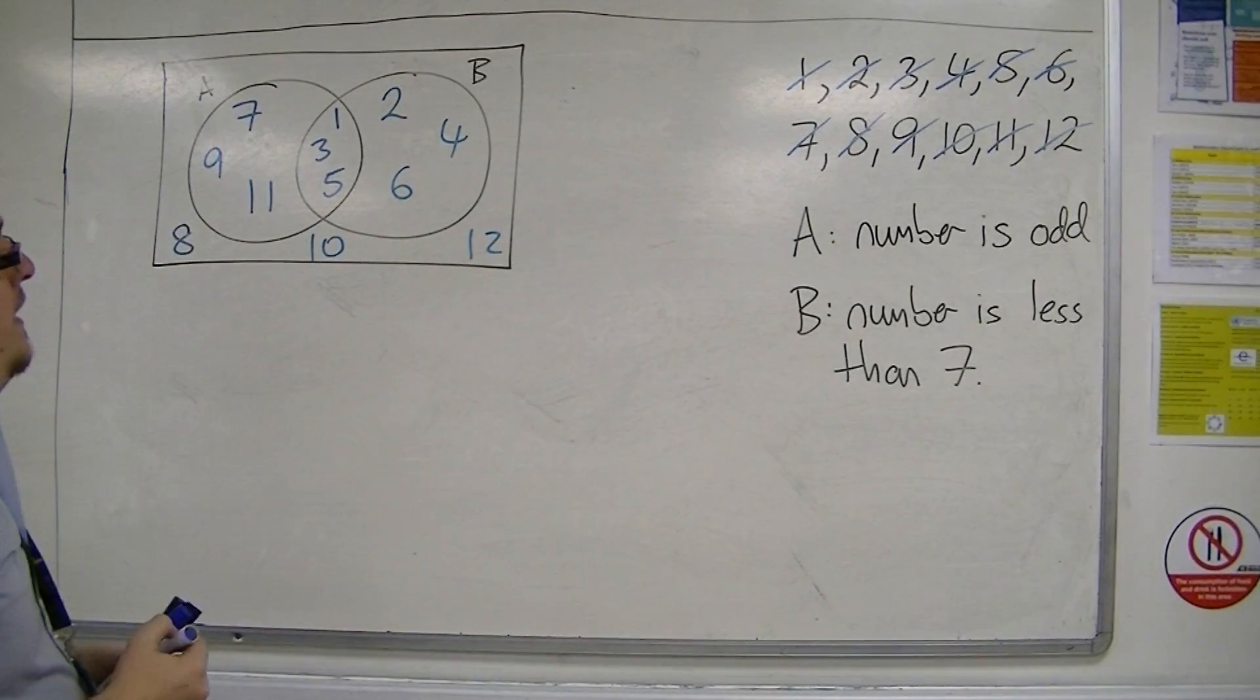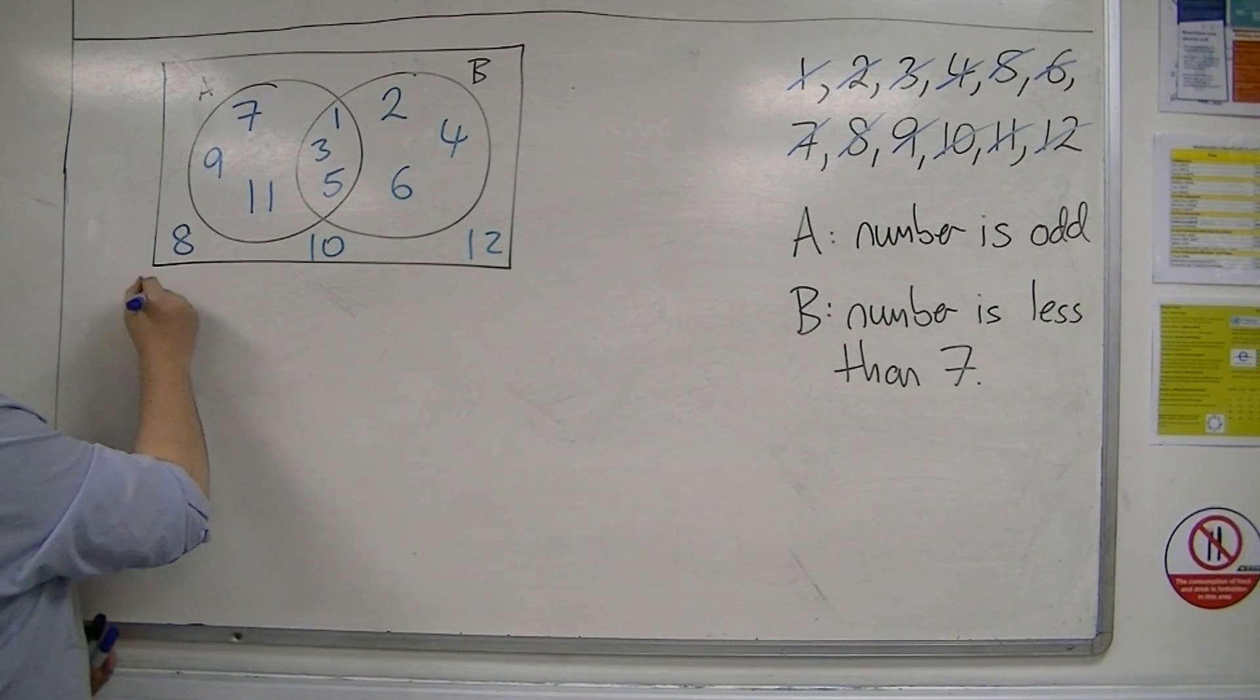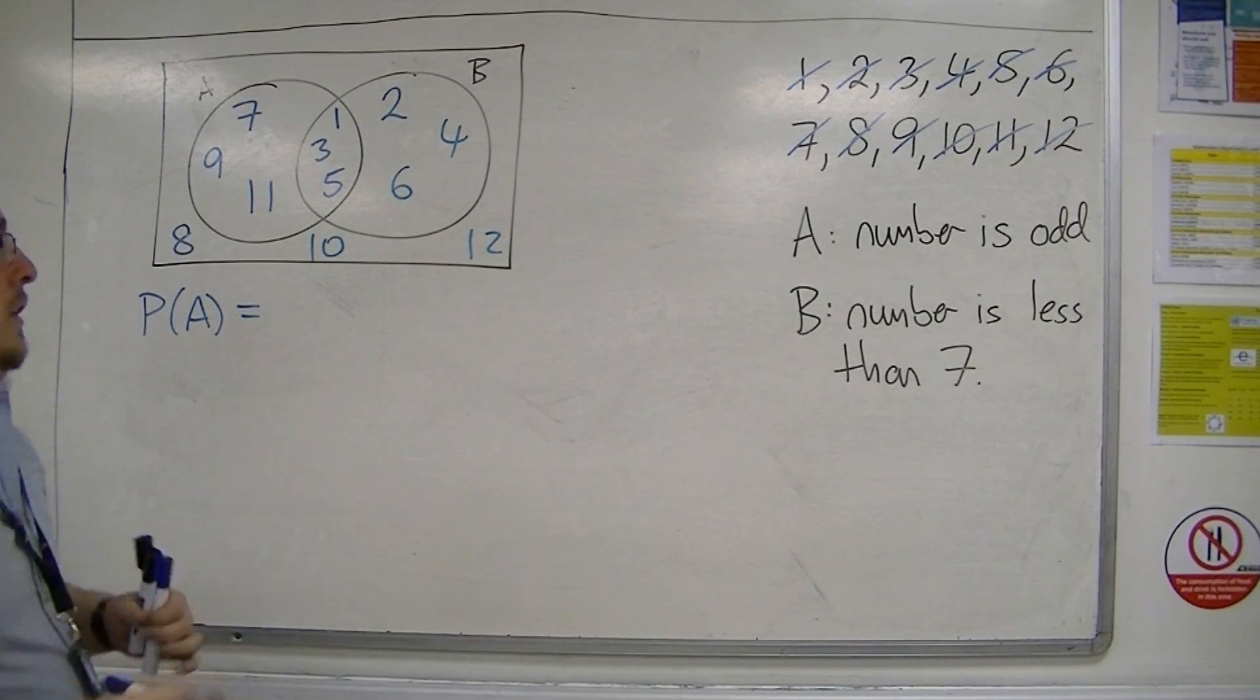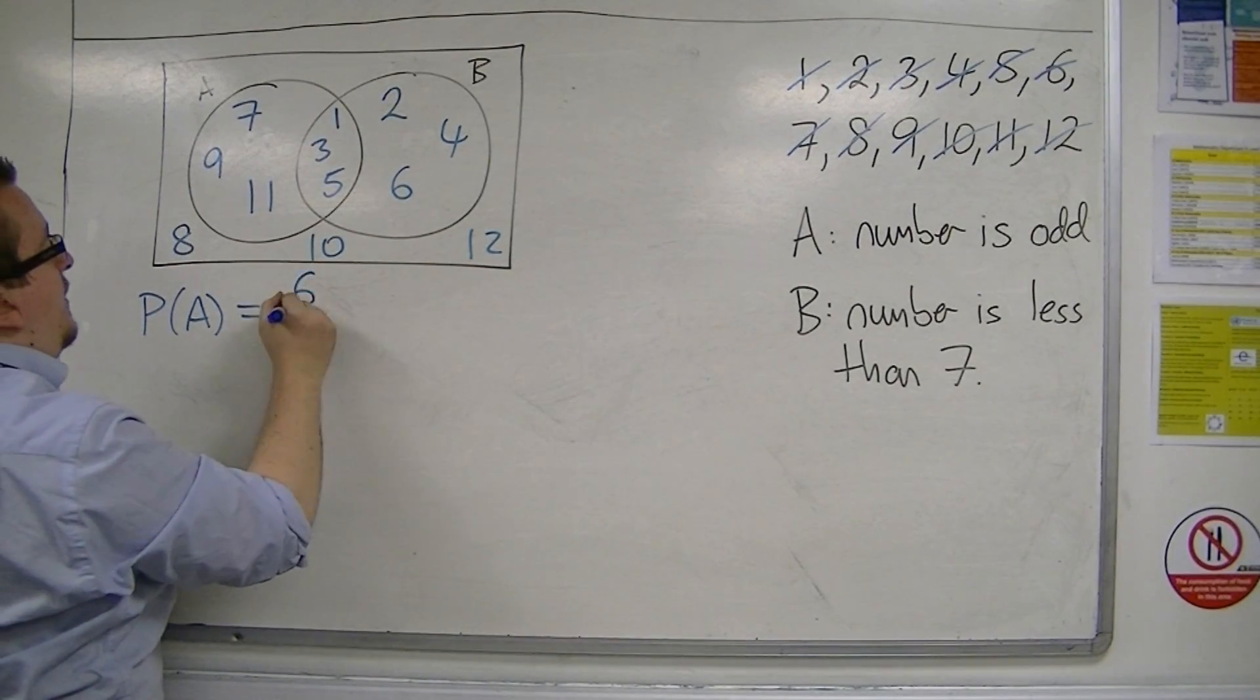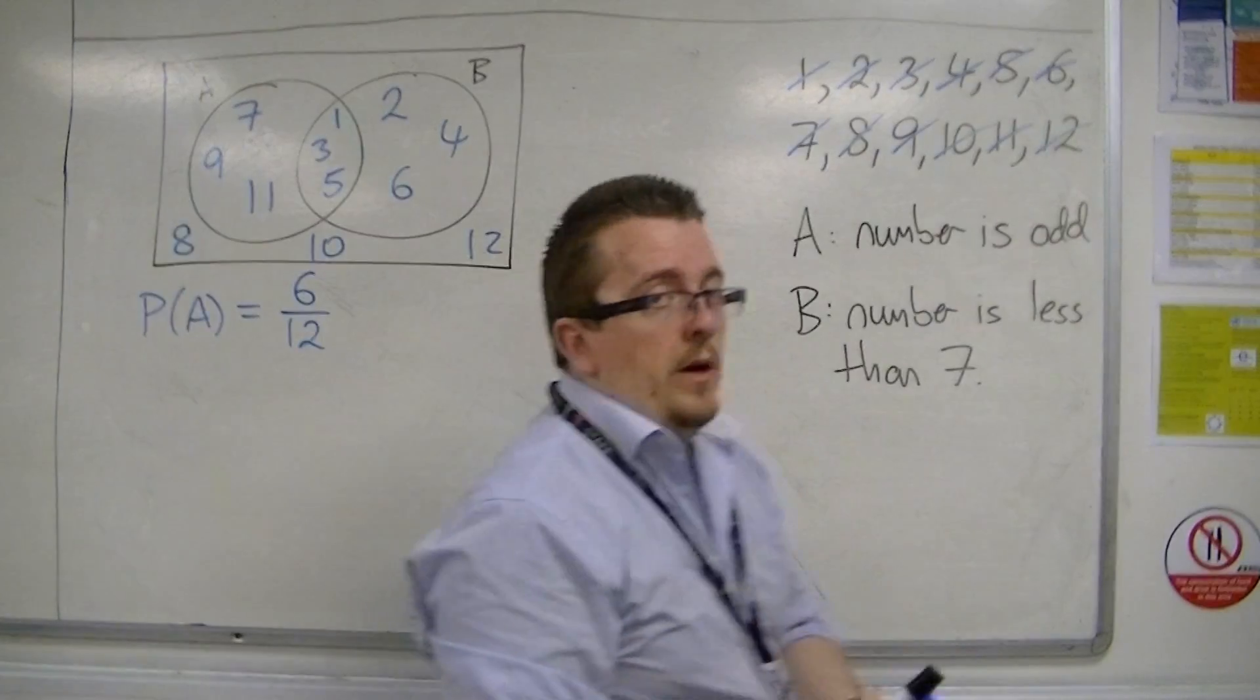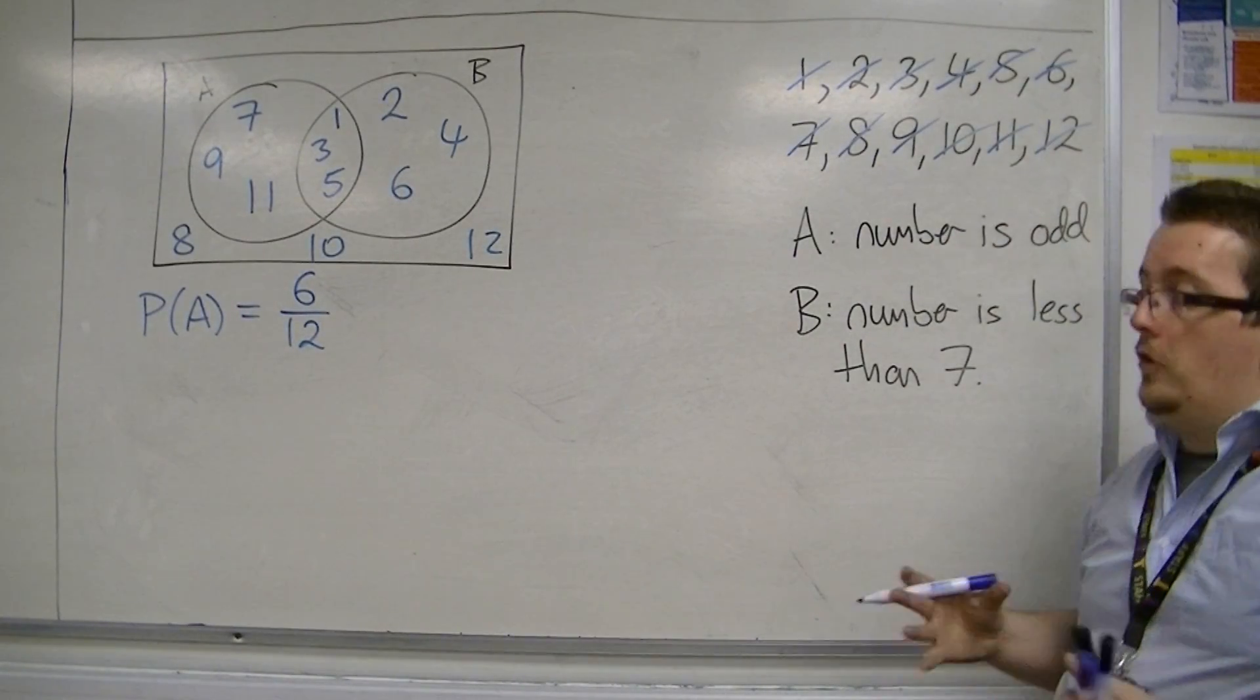Now, let's say I wanted to know what the probability of A was. The probability of event A. So that's nice and straightforward. We've got 1, 2, 3, 4, 5, 6. So we've got 6 out of possible 12. So 6 out of 12, 1 half, is the probability of picking a number that is odd.